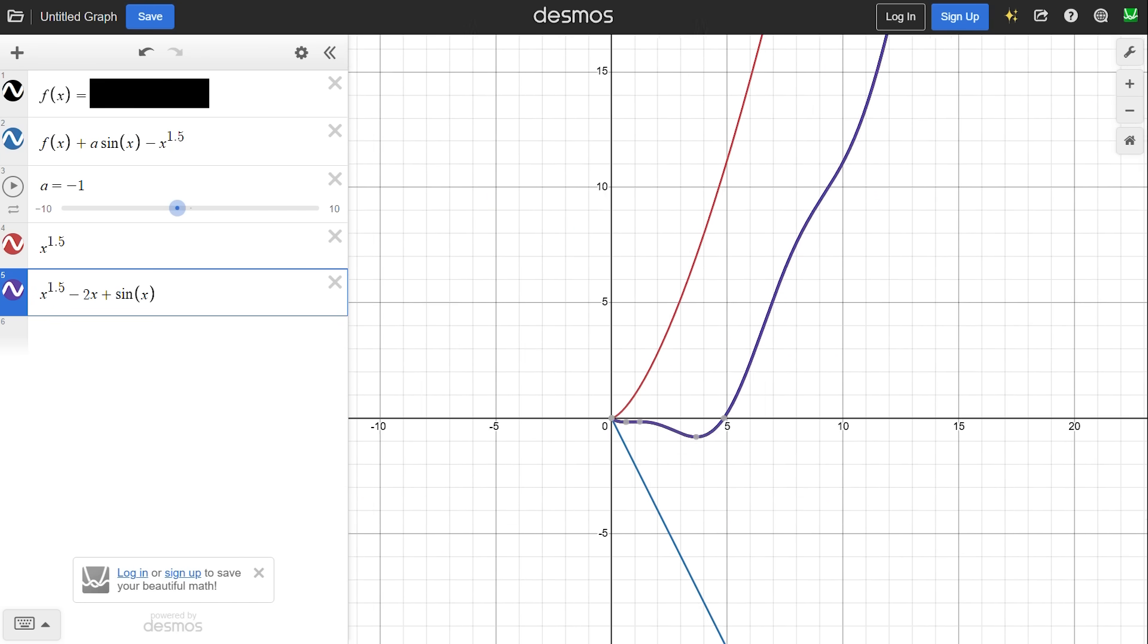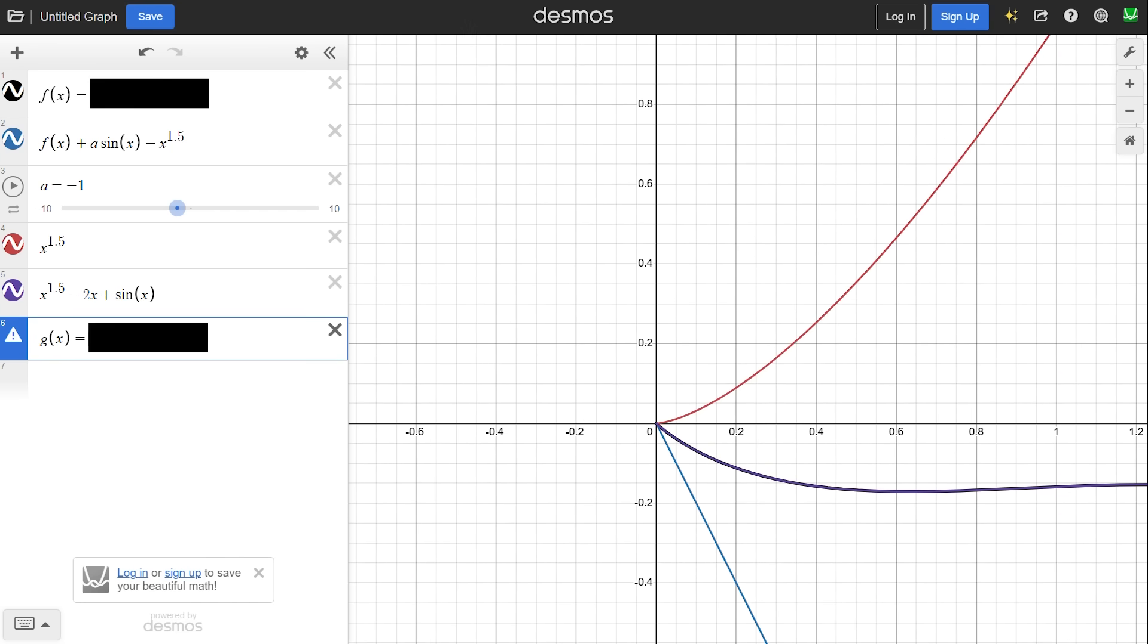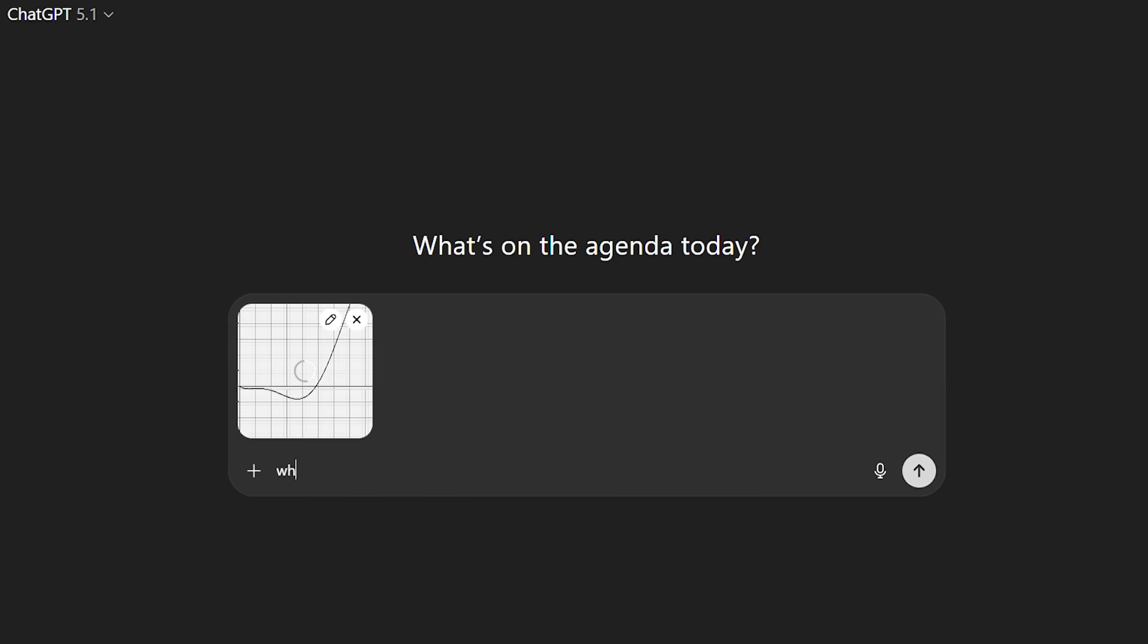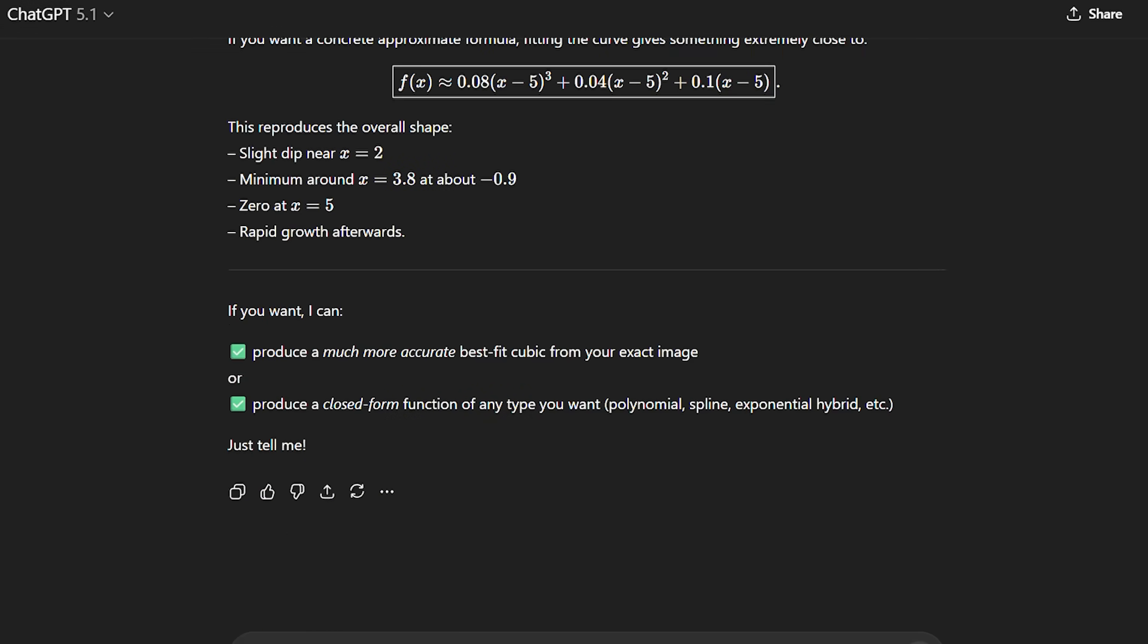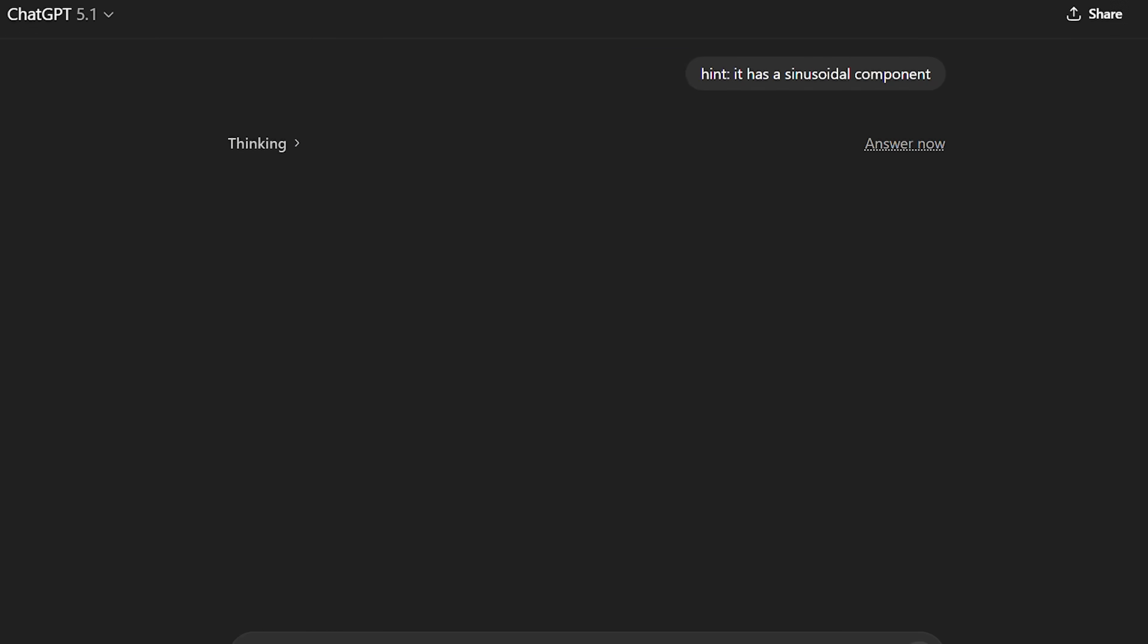This would be a pretty difficult round, but you can make things easier by simply choosing a different function. Bonus, it's pretty much immune to cheating. How are you going to cheat? Taking a screenshot and putting it into ChatGPT won't help, it's too slow, and it doesn't even come close to getting it right.